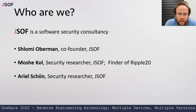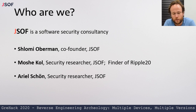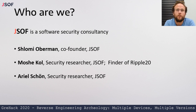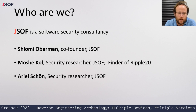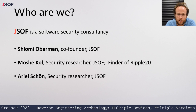A little bit about who we are. We're JSOF, a software security consultancy that does a lot of security research and penetration testing, focusing mostly on IoT. My name is Shlomi Obermann, I'm a co-founder of JSOF. Speaking with me today is Moshe Kohn, a security researcher at JSOF and finder of the Ripple 20 vulnerabilities, and Arielle Sean, a security researcher at JSOF involved in the exploitation and reverse engineering process of Ripple 20.